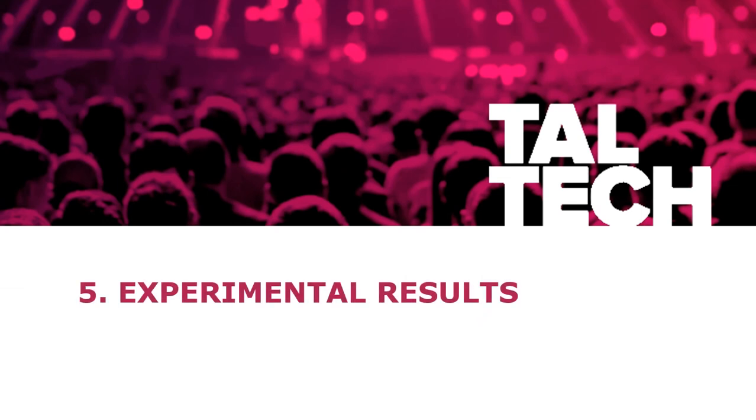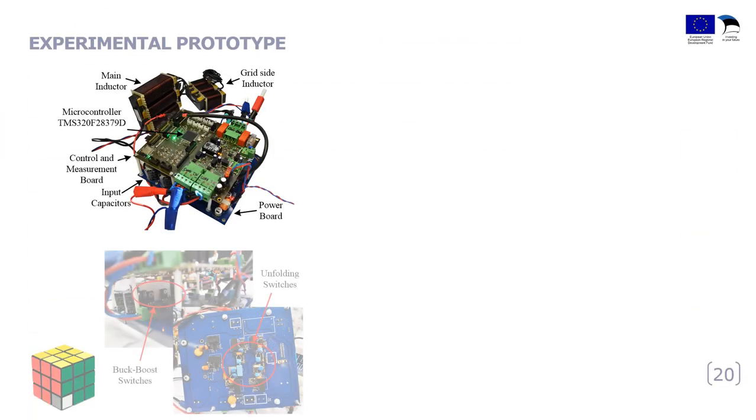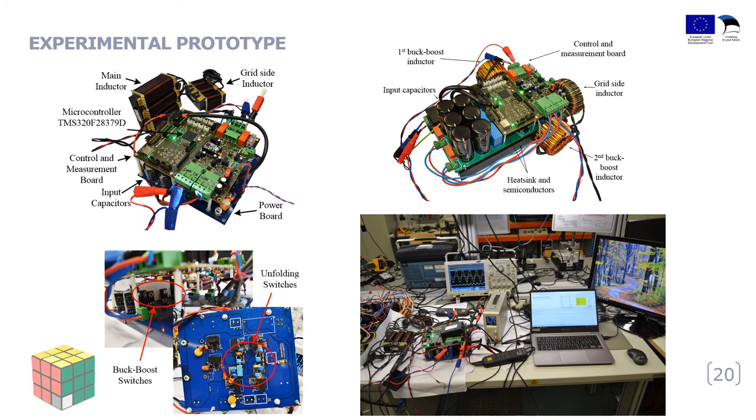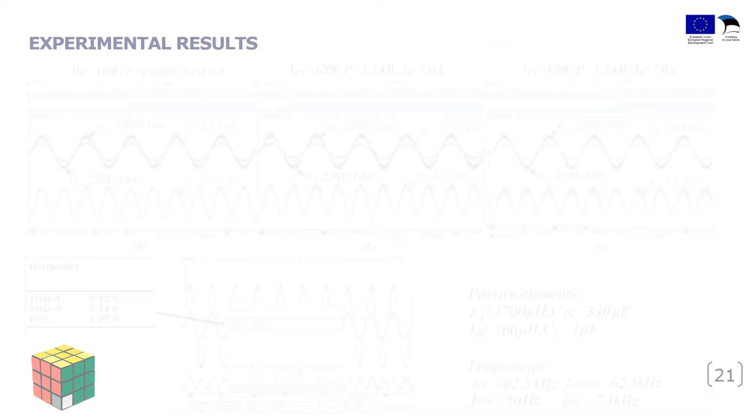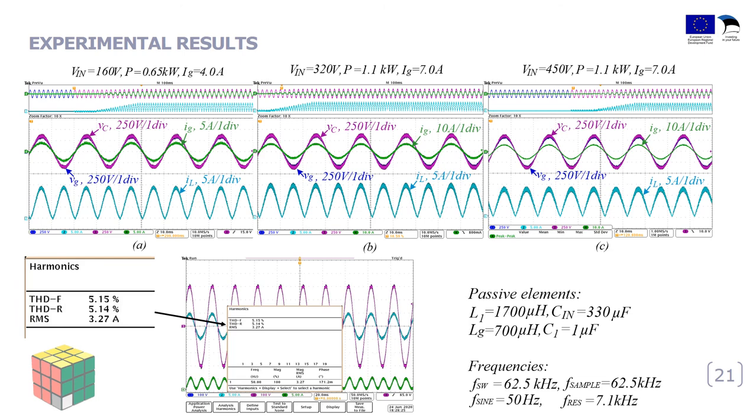The last key point is experimental results. We have designed two inverters. On the left side is twisted inverter, on the right side is simple buck-boost inverter. You can see from the lower picture that the heatsink of the buck-boost switches are so huge, but the unfolded transistors are placed on the bottom side and have no heatsink at all. The maximum tested power was 1.1 kW. The THD was not more than 5%, the switching frequency was around 62 kHz.